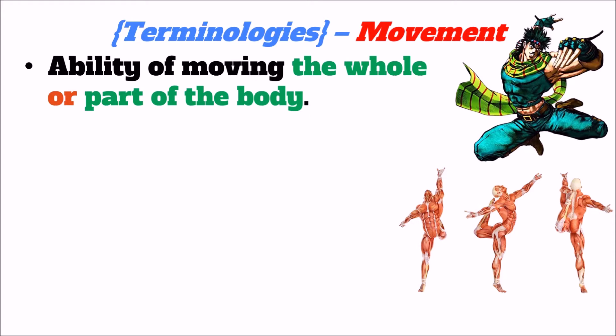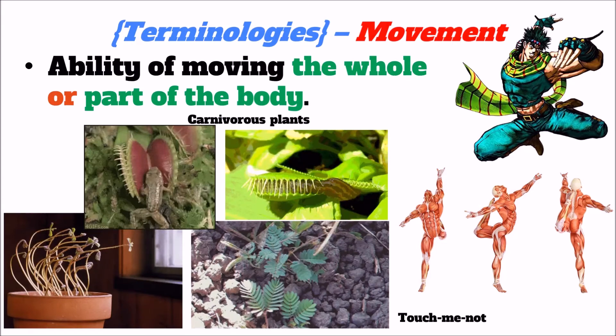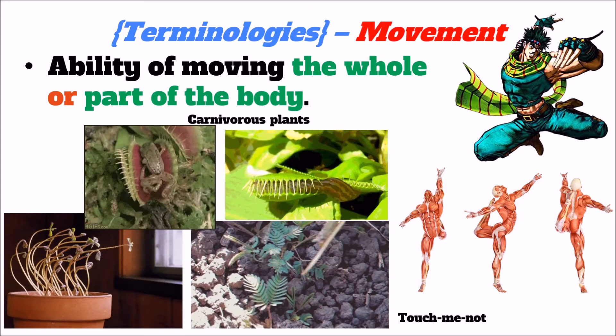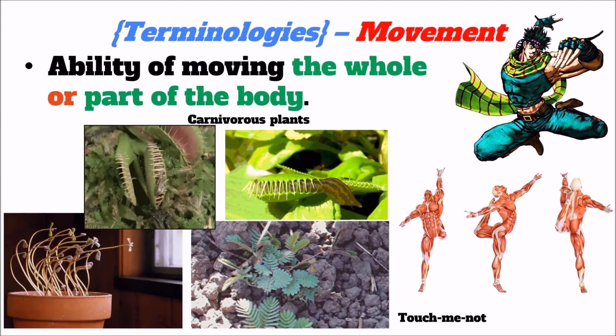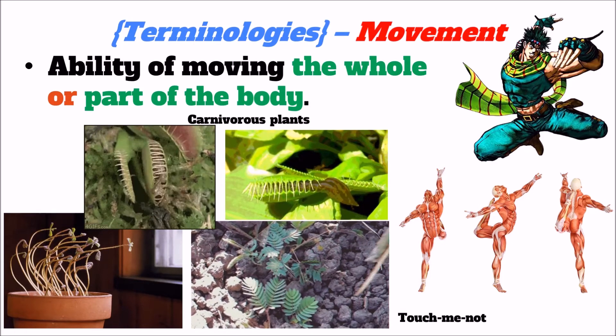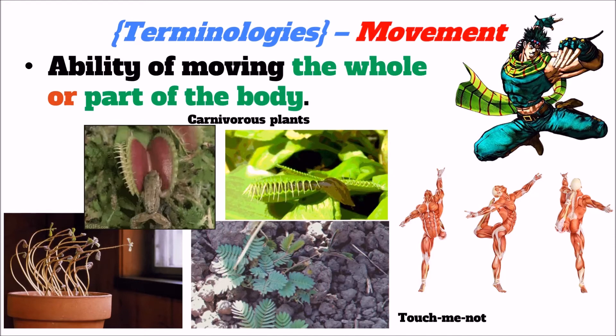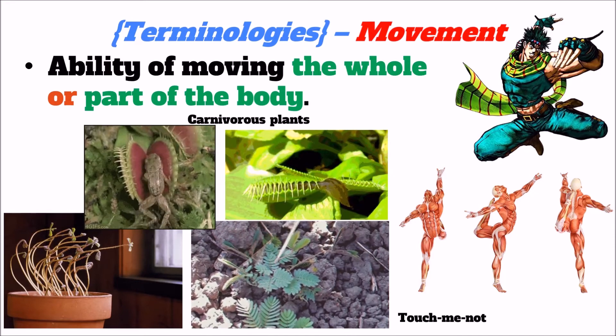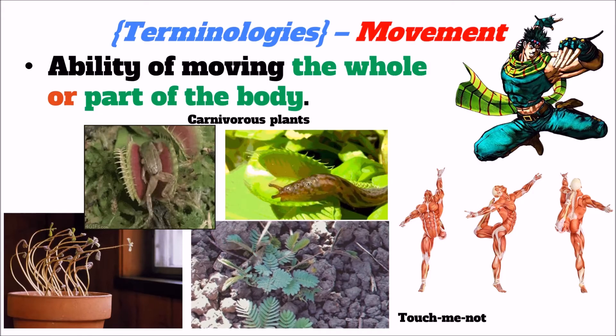For movement, it's easy to understand that it's the ability of moving the whole or the part of the body. In human beings, we can move one arm, move one leg, or move our whole body to do different postures. So how about plants? They can also move, but just not move the whole body. The common example is light tropism, which we are going to talk about in this video. There are also different examples like touch-me-not or plants that feed on animals — they can also move.